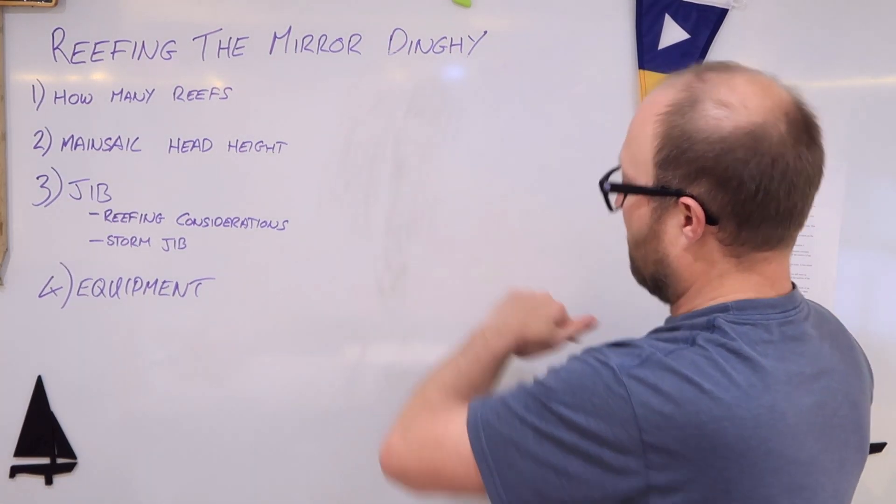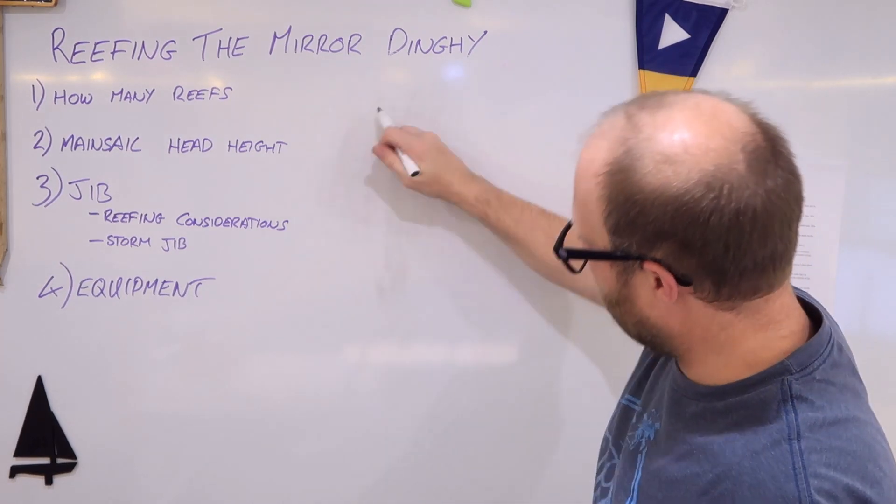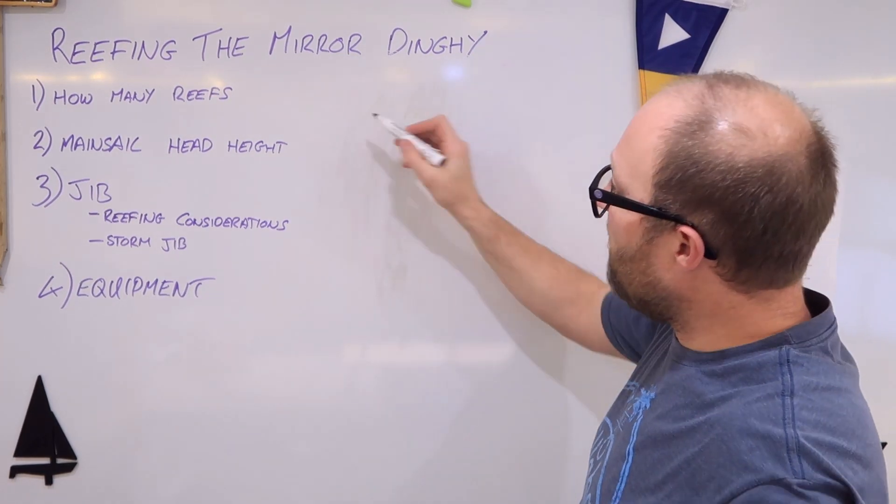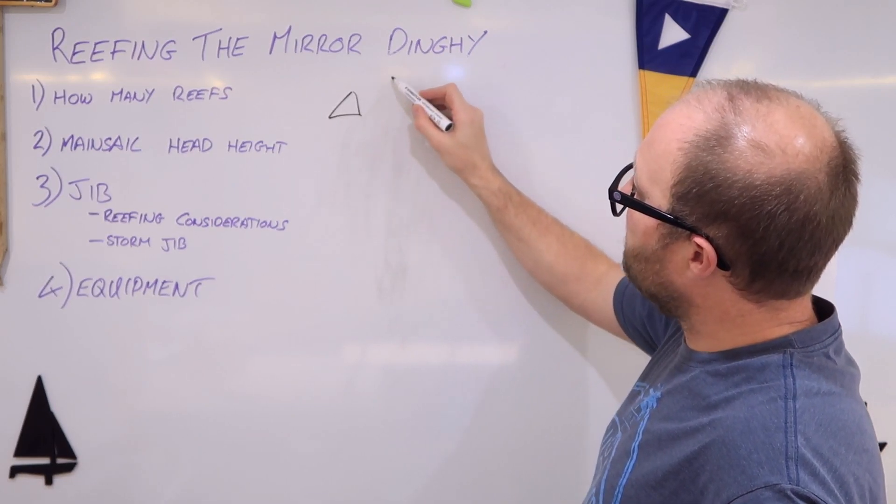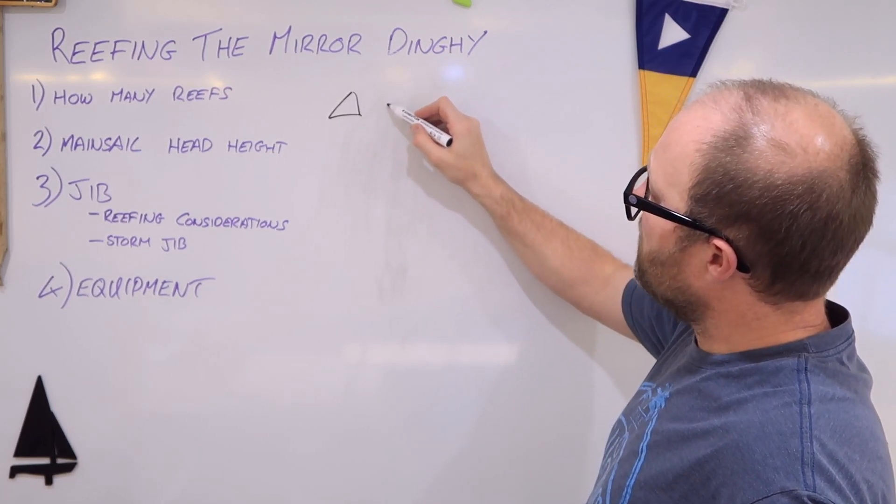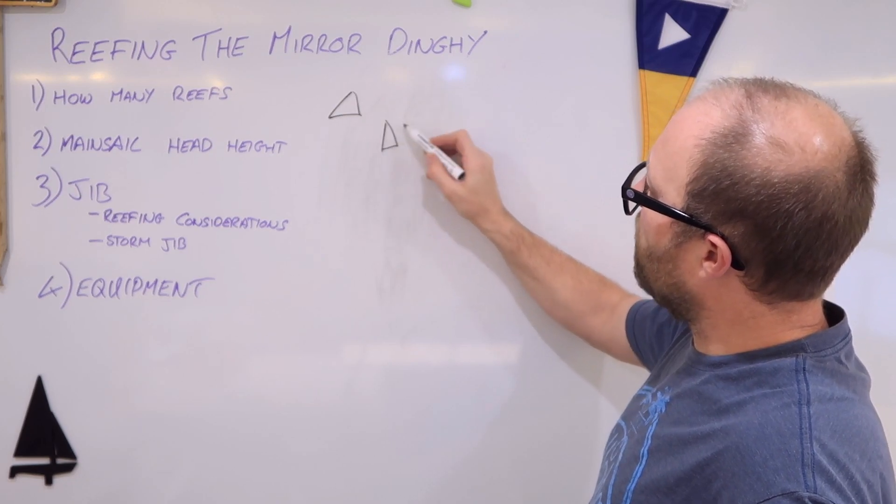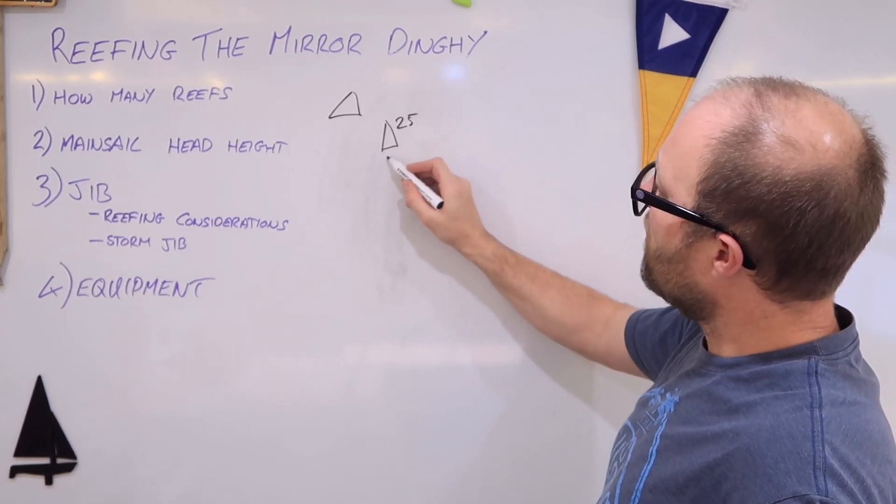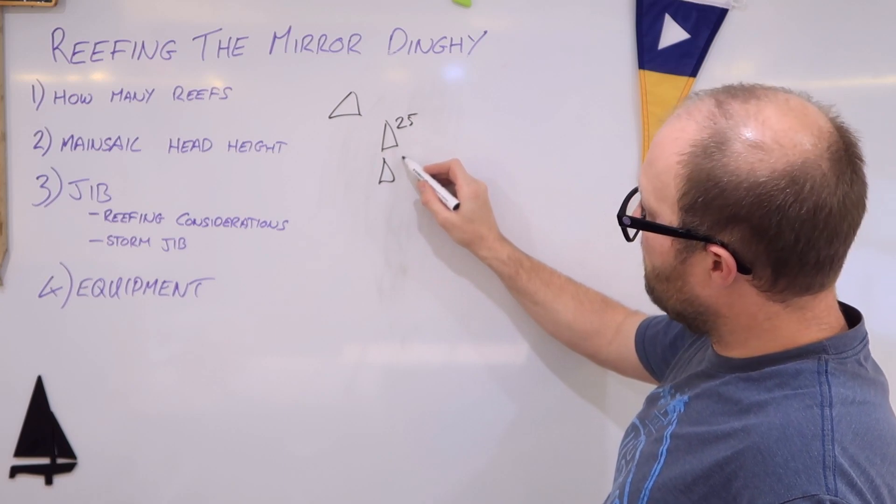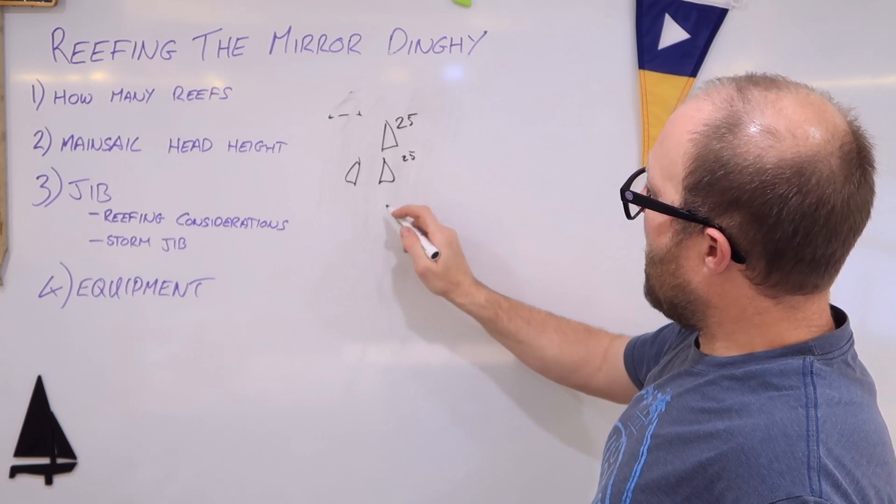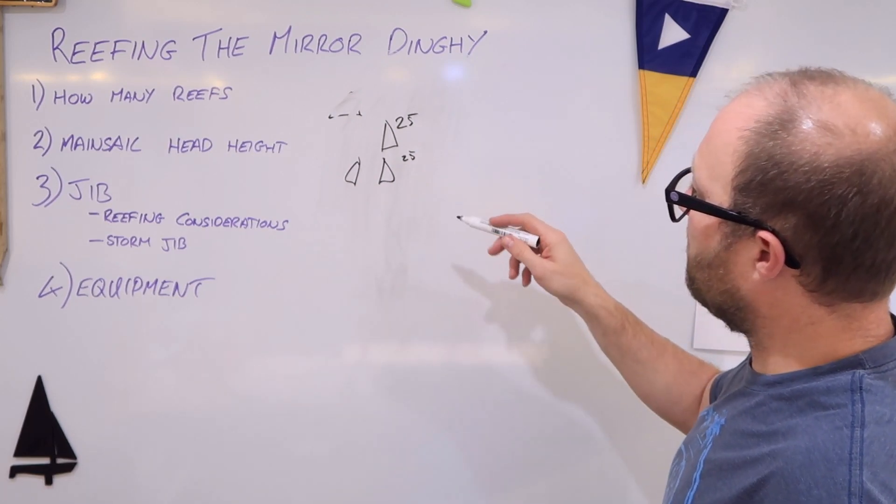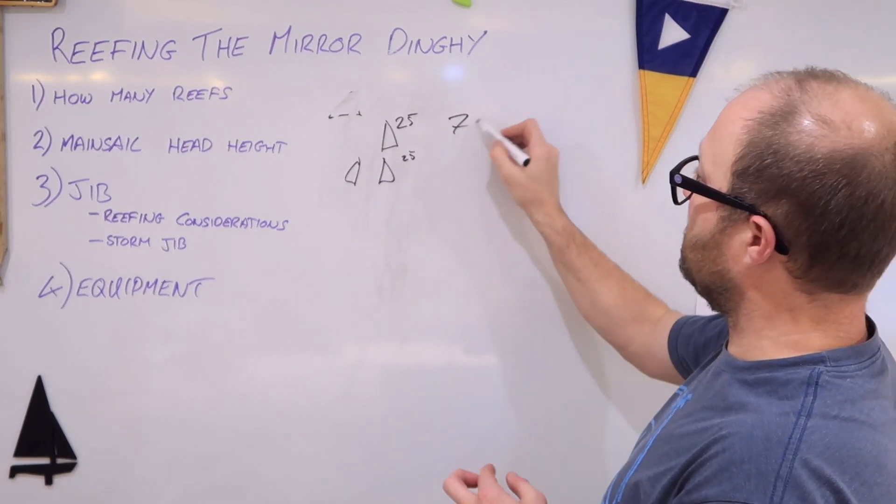I do apologize for the board that doesn't really want to wipe very well. If I have two reefs in the main, then I'm going to have another option. I'm going to have, let's just say we do a 25% on its own, 25% with the jib. And that adds another two options, which is seven.